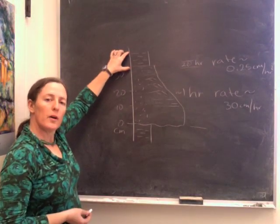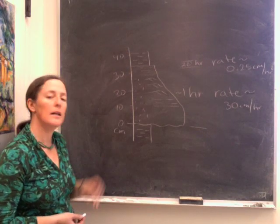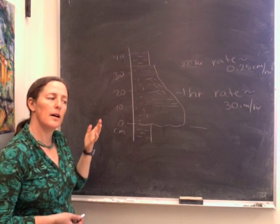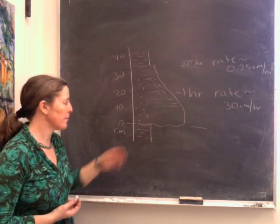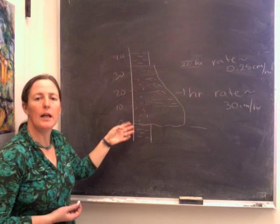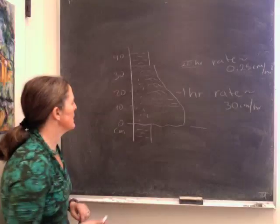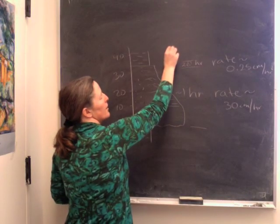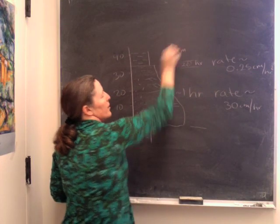Now, the shale or mud that settles out between turbidites is coming from mud that's suspended in the water, and it's a very slow accumulation rate. The details of that rate depend on the supply of mud. Let's say that here we have 10 centimeters of shale, and that might represent 100 or 1,000 years. So we'll say 100 years and not hours in this case.